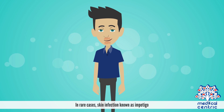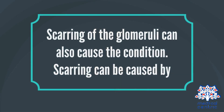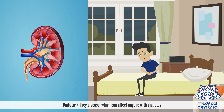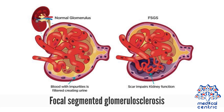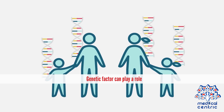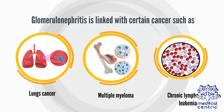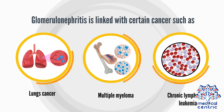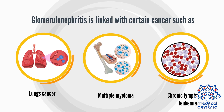In rare cases, skin infection known as impetigo can be a cause. Scarring of the glomeruli can also cause the condition. Scarring can be caused by high blood pressure, diabetic kidney disease, focal segmental glomerulosclerosis, and genetic factors. Glomerulonephritis is also linked with certain cancers, such as lung cancer, multiple myeloma, and chronic lymphocytic leukemia.